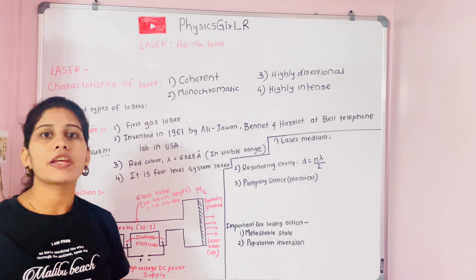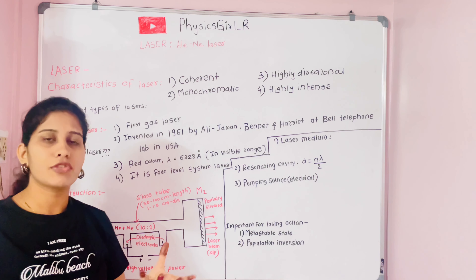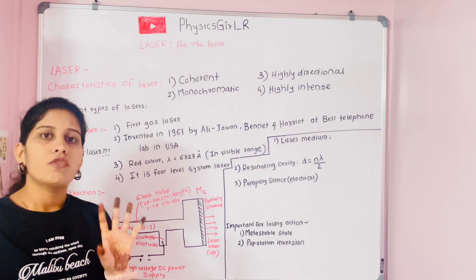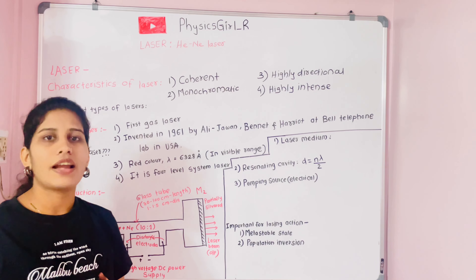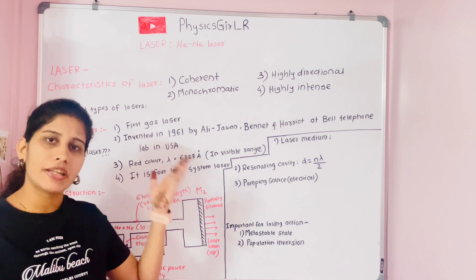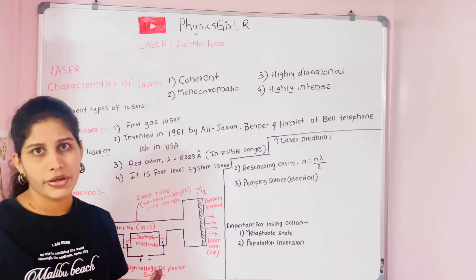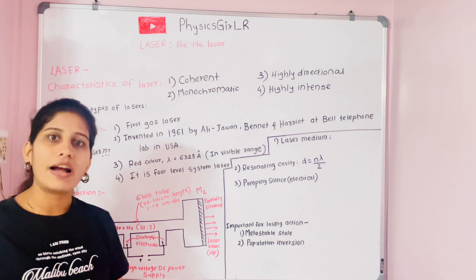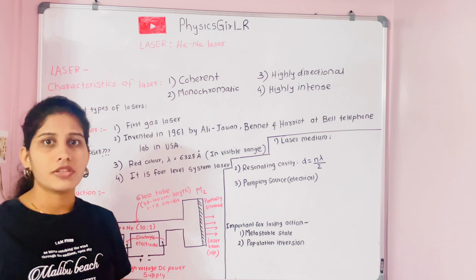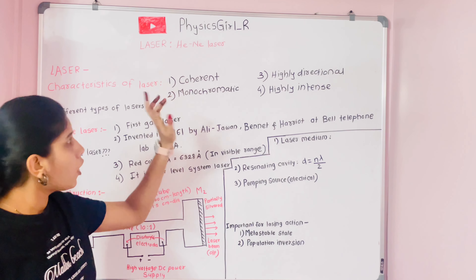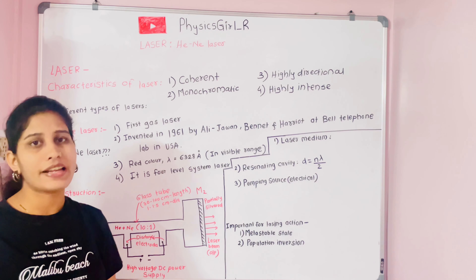Laser light is distinguished from ordinary light. Ordinary light, such as tube light or any common light source, emits in all directions — it is omnidirectional. But laser light travels in only one direction. Also, ordinary light is not monochromatic; it consists of different colors. White light, for example, consists of seven colors ranging from red to violet in the spectrum. Ordinary light is not highly directional, whereas laser light is highly directional.